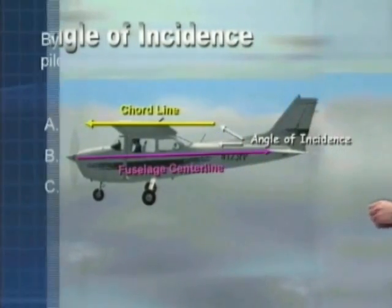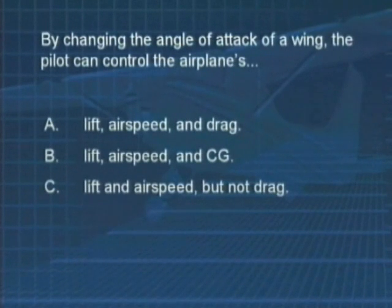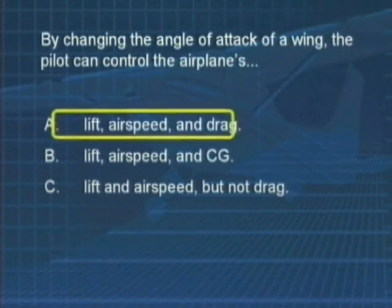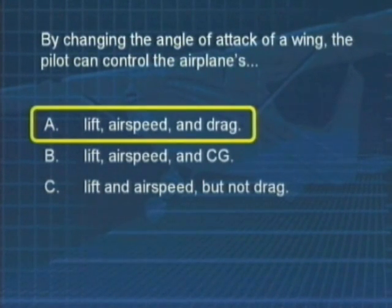Time for the good old-fashioned FAA test question. By changing the angle of attack of a wing, the pilot can control the airplane's: A — lift, airspeed, and drag; B — lift, airspeed, and CG (center of gravity); or C — lift and airspeed, but not drag. Your answer better be A. By changing the angle of attack of a wing, the pilot can control the plane's lift, airspeed, and drag.